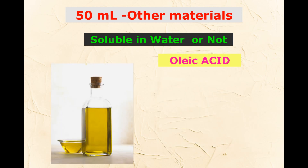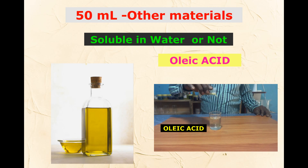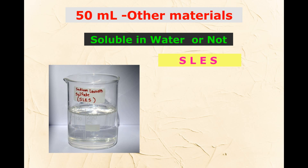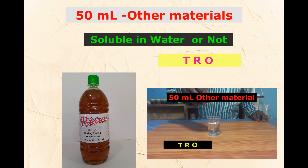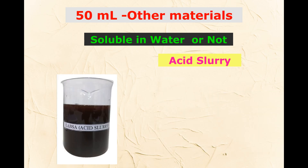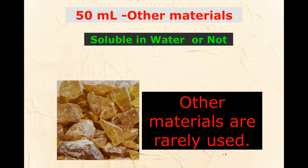Next, oleic acid: oleic acid is not soluble in water. In phenyl compound, if oleic acid is in the exact composition it will not make any problem, but if oleic acid is a little extra it will make a layer in the phenyl solution. Next, SLES: SLES is completely soluble in water. Next, turkey red oil: it is also completely soluble and dispersible in water. Next, acid slurry: acid slurry is completely soluble in water. Rosin gum and polysorbate are rarely used materials, so we can leave those aside.